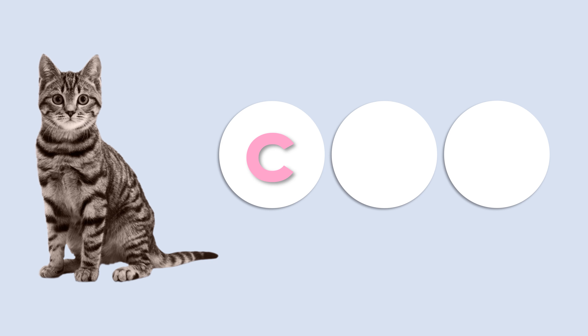Very good. Now tell me, what the second sound is? Cat, cat. What sound comes after k sound? Listen carefully. Cat. That's right, the second sound is a. Now let's see what the last sound is. Cat, cat. Yes, can you tell me what the last sound is? Yes, t. Cat. So the last sound is t. K, a, t — cat.